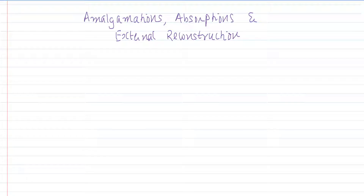In accounting language, mergers and acquisitions are called amalgamations and absorptions. In this episode, we want to be clear with the meaning of amalgamations, absorptions, and one more term: external reconstruction. Let us figure out what these terms mean — when can we say it is an amalgamation, when is it an absorption, and what do we mean by external reconstruction.